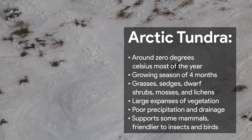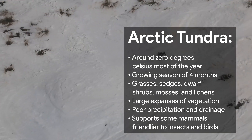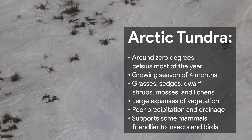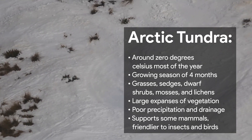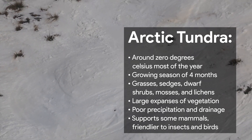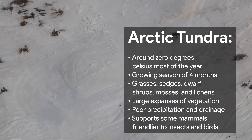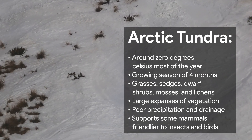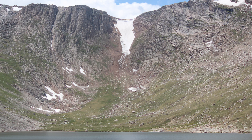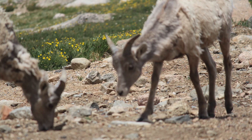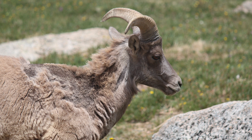Arctic tundra stretches across the far north in the northern hemisphere. Temperatures are around zero degrees Celsius or lower for most of the year, with a growing season of only four months. In the growing season, we see grasses, sedges, dwarf shrubs, mosses and lichens. Tundra often occurs in large expanses of vegetation, but with poor precipitation and drainage. Frozen permafrost means only the surface layer of the soil can be used to nourish plants. The habitat can support some large and small mammals, but it is friendlier to insects and birds.